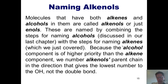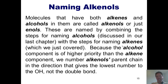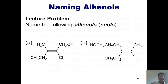How do we name molecules that have both a carbon-carbon double bond and an alcohol somewhere else in them? Molecules with both alkenes and alcohols are called alkenols, or sometimes just enols — a name formed by combining the words 'alcohol' and 'alkene.' These are named by combining elements of alcohol naming with alkene naming. Because the alcohol component has higher priority than the alkene component, we number the parent chain to give the lowest number to the OH, not to the double bond.